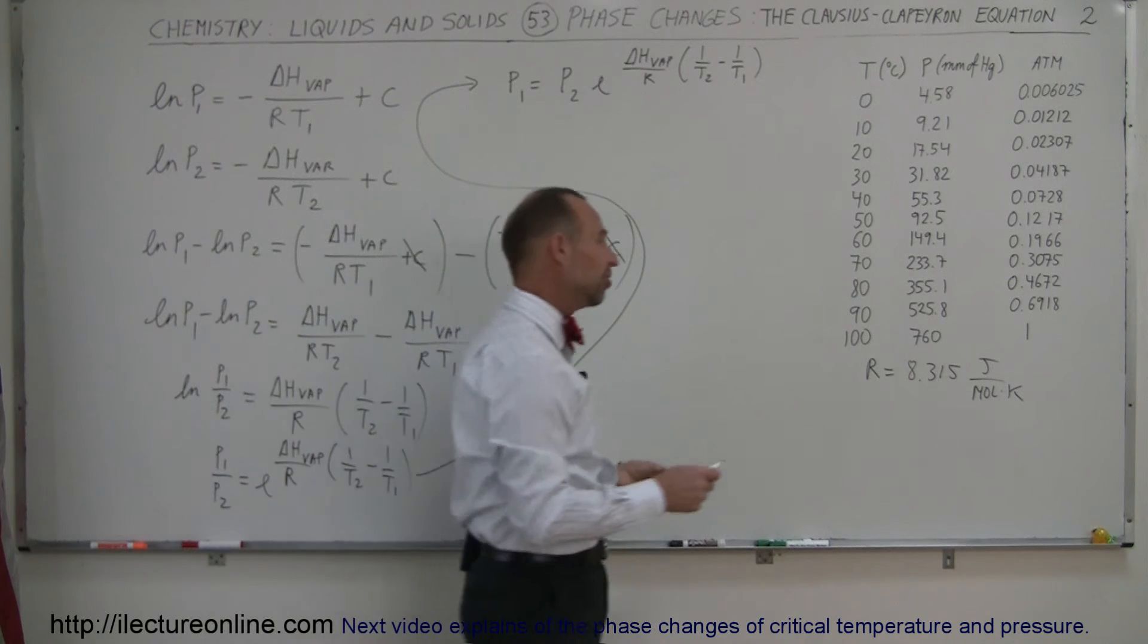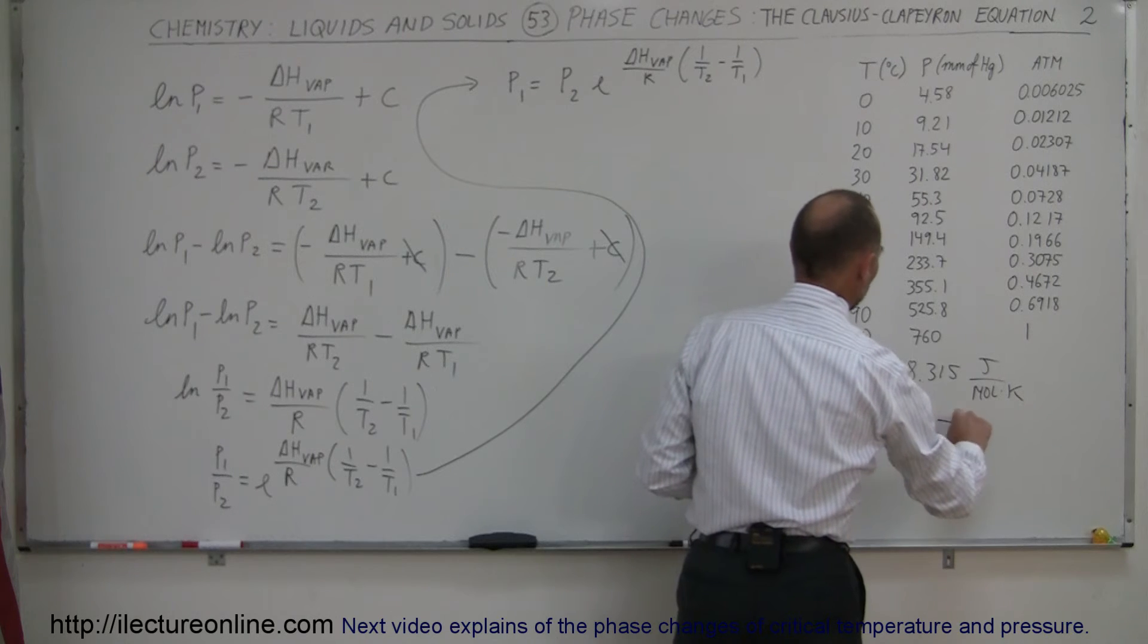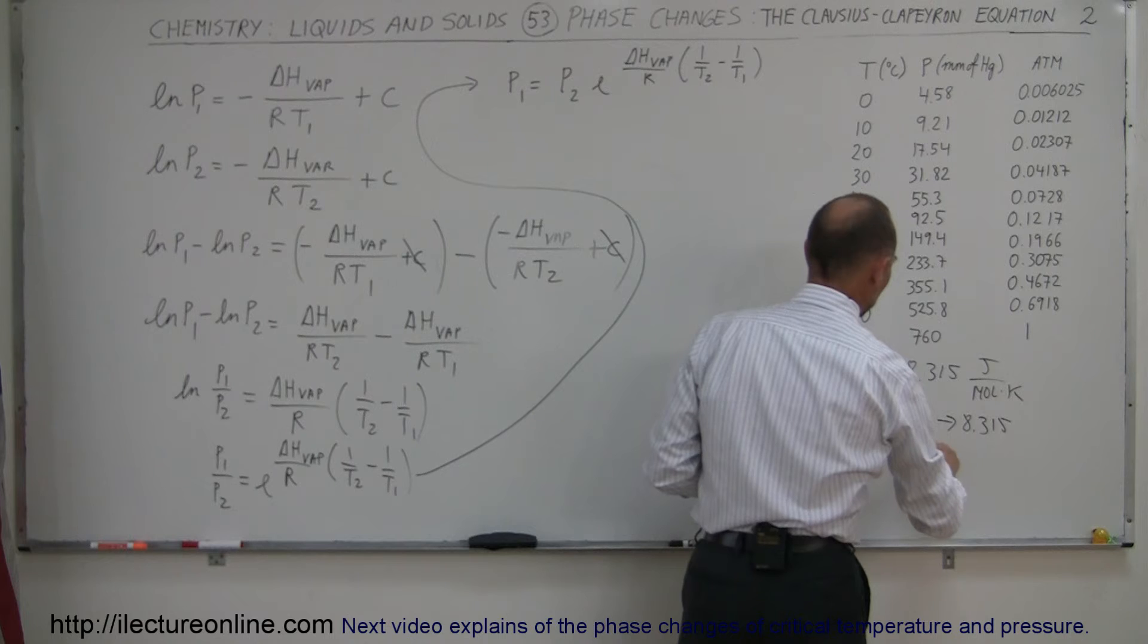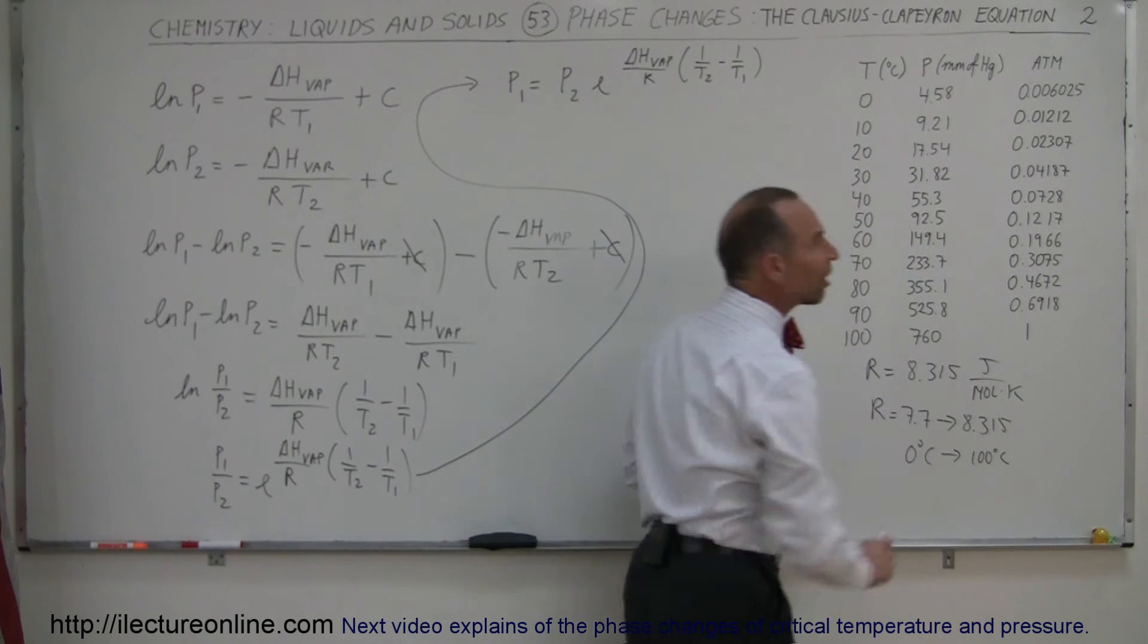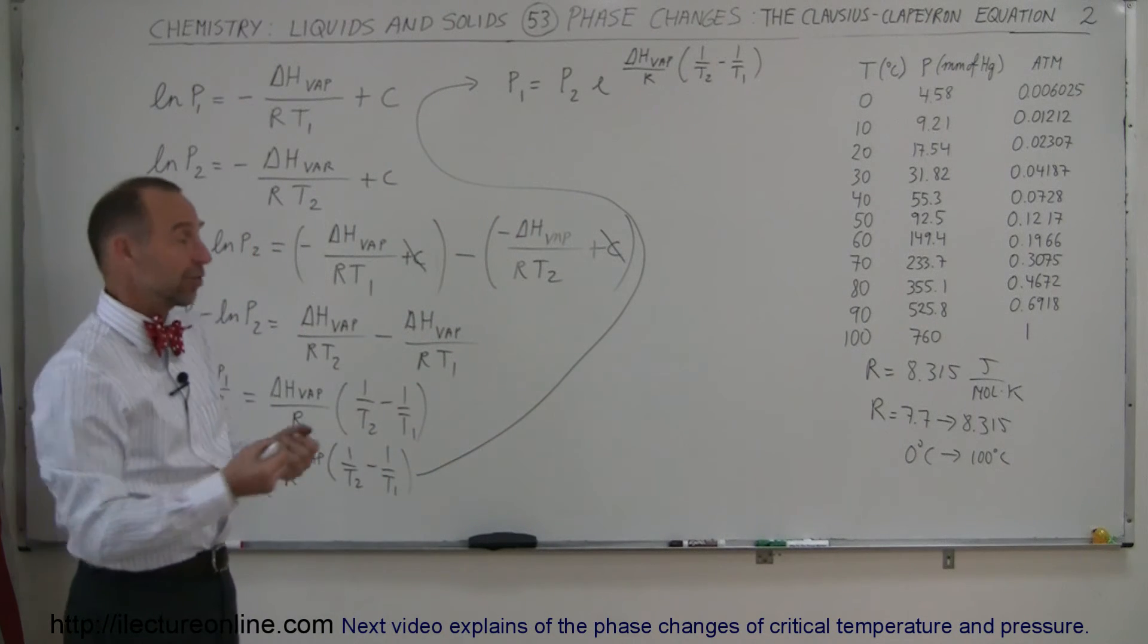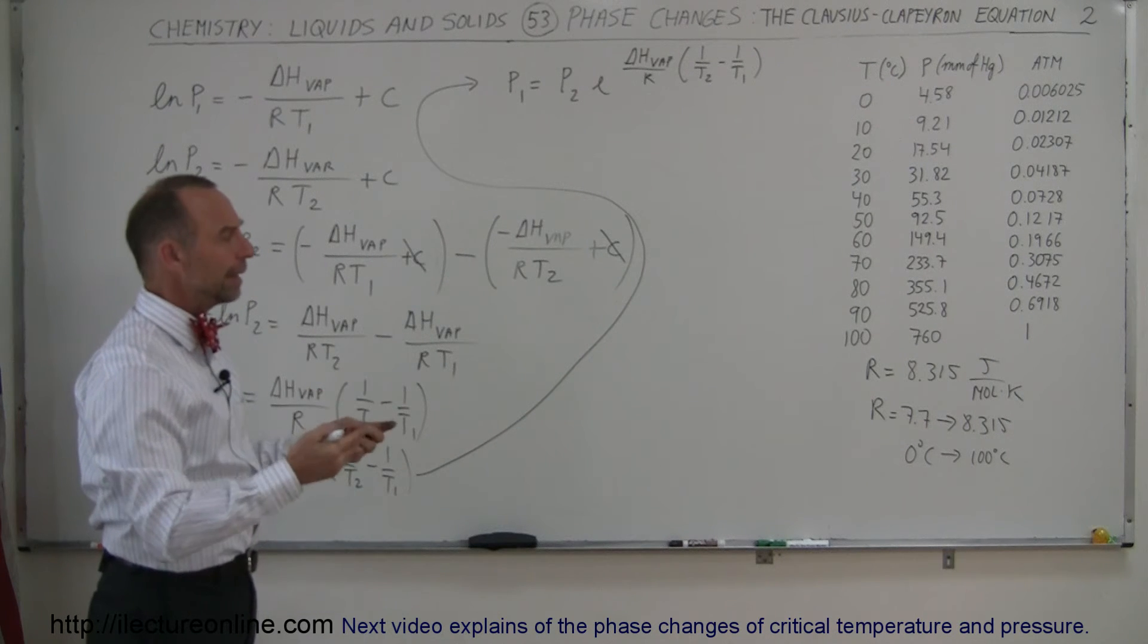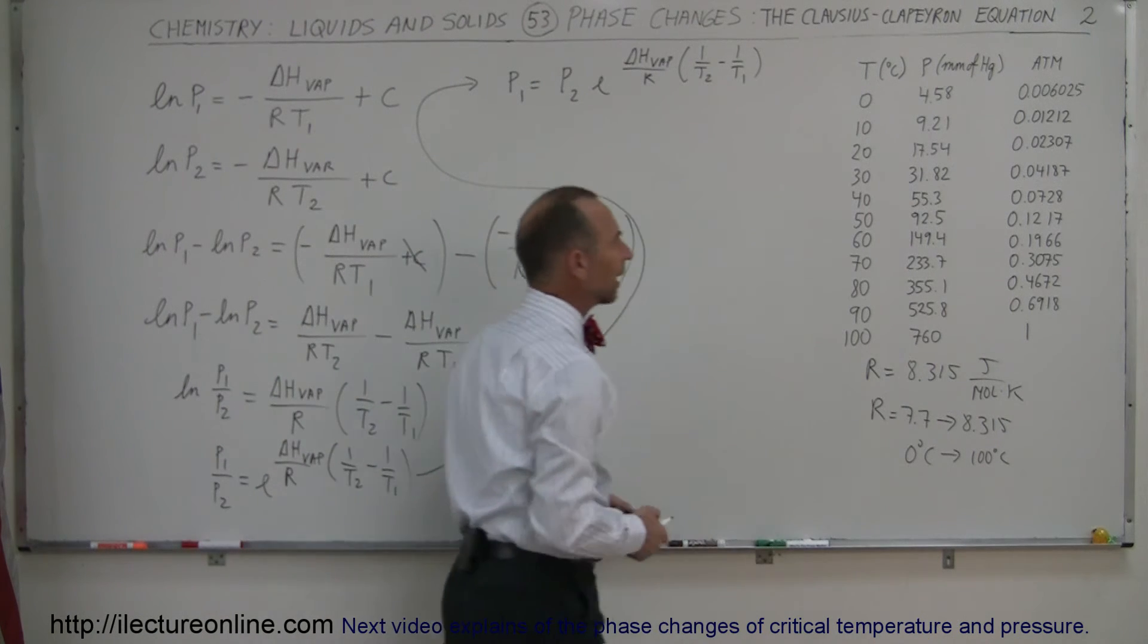R changes somewhere from about 7.7 all the way to about 8.315, for temperatures of 0 degrees centigrade all the way up to 100 degrees centigrade. So there's some variation in R, and the equation is only an approximation. It will not give you an actual value. To get the actual values, you have to make a real physical measurement.